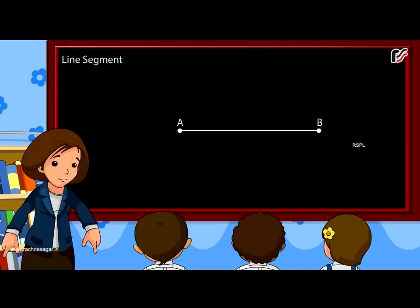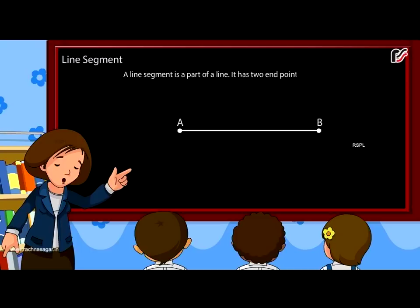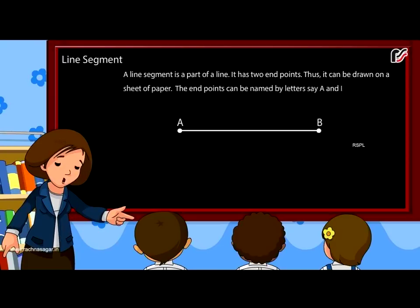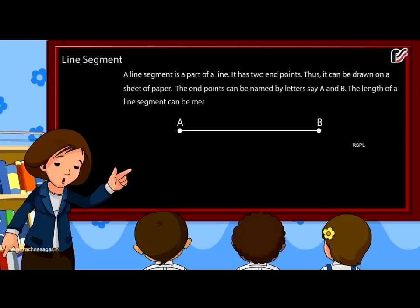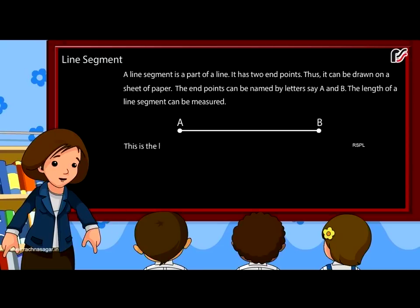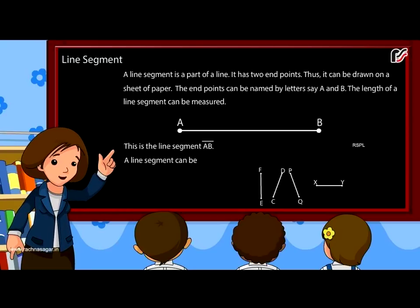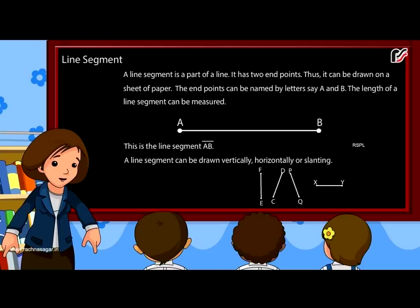Line segment: A line segment is a part of a line. It has two end points. Thus, it can be drawn on a sheet of paper. The end points can be named by letters, say A and B. The length of a line segment can be measured. This is the line segment AB. A line segment can be drawn vertically, horizontally or slanting.